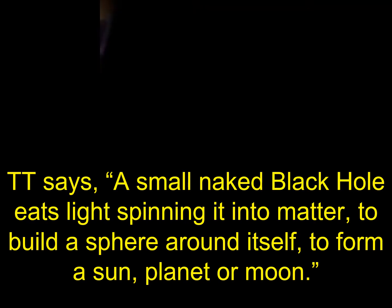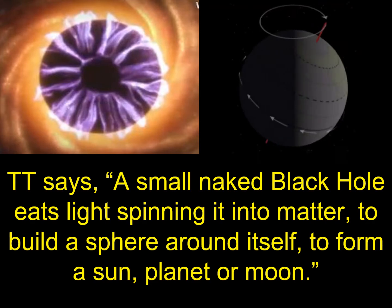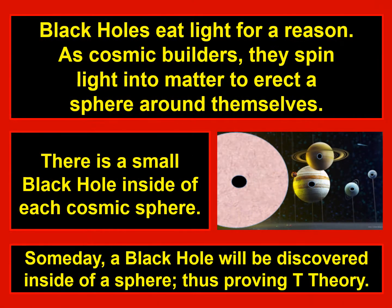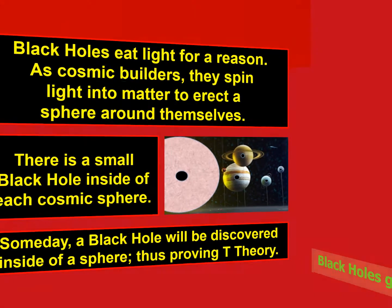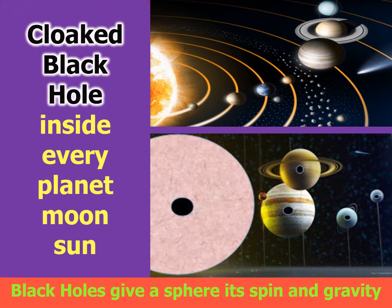Trillion Theory says a small naked black hole eats light, spinning it into matter to build a sphere around itself, to form a sun, planet, or moon. Black holes eat light for a reason — as cosmic builders, they spin light into matter to erect a sphere around themselves. Thus there is a small black hole inside of each cosmic sphere. And someday a black hole will be discovered inside of a sphere, thus proving Trillion Theory.